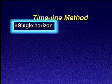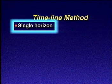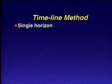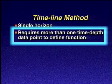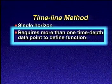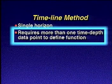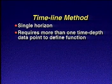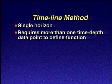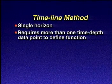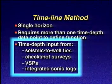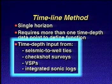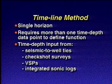We use the timeline method to convert to depth a single horizon that reflects a constant age or stratigraphic unit. This method requires more than one time-depth data point for each horizon of interest, so that we can statistically define a time-depth function. In this method, we use input data from a variety of sources to calculate an average velocity curve for a particular horizon.